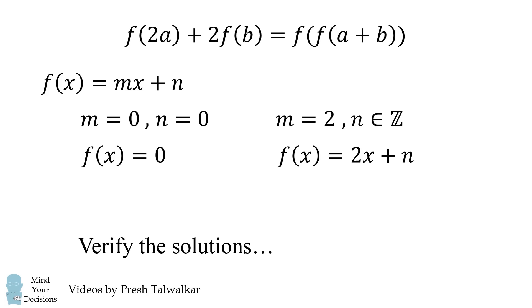We want to verify that these actually are true and substitute them back into our original equation. We can do that and we'll see that we'll get equality for both cases. Therefore these are the only solutions. Either F of X is identically 0 or F of X is equal to 2 times X plus N for some constant N.